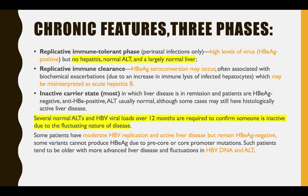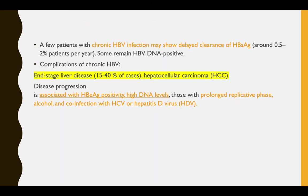So you have the acute form, the replicative chronic form, and then the inactive carrier state. To confirm someone is in the inactive carrier state, you have to have normal ALTs and HBe-negative for 12 months before you can declare inactive carrier state — it is not easily determined. Loss of HBsAg is possible but more likely denotes a complication: liver failure or carcinoma.